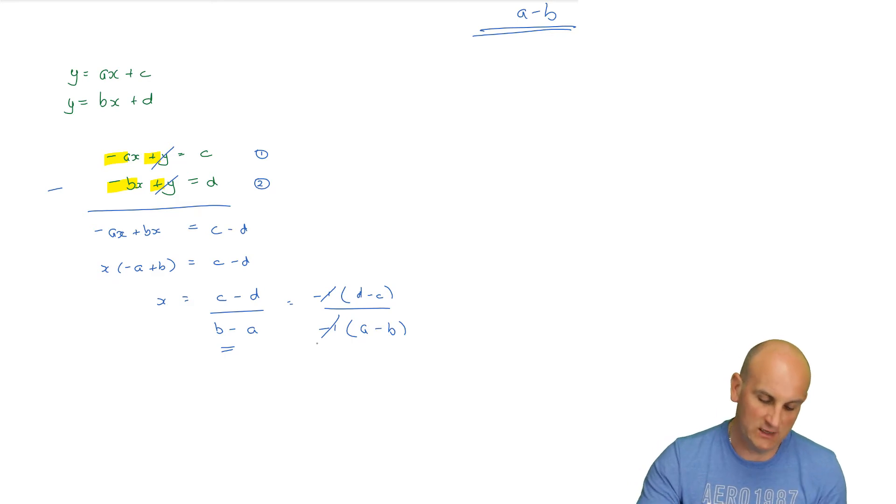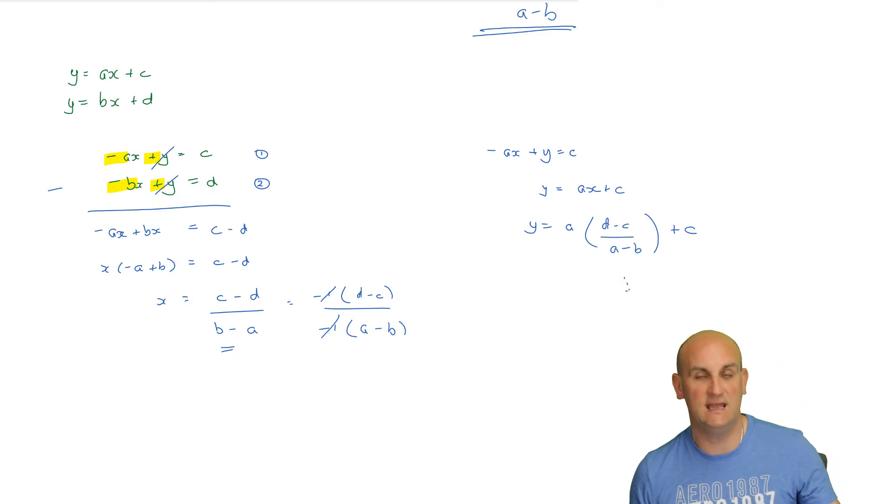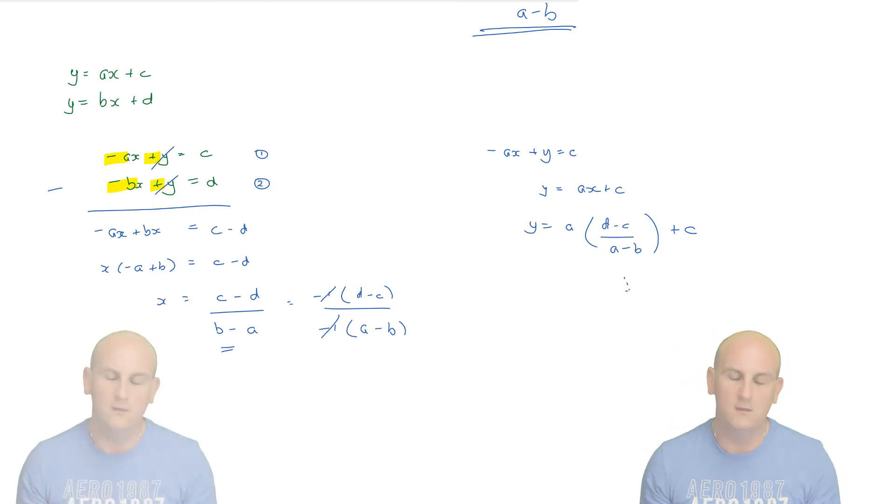Using my value of x, how would I now find my value of y? I'd substitute into that original equation ax plus y equals c. We'd rearrange it to give y equals ax plus c. Substitute in my x value, which gives me a times d minus c on a minus b all plus c. And the rest is history because I've already done it previously. Feel free to rewind and see what I'm going to do there.